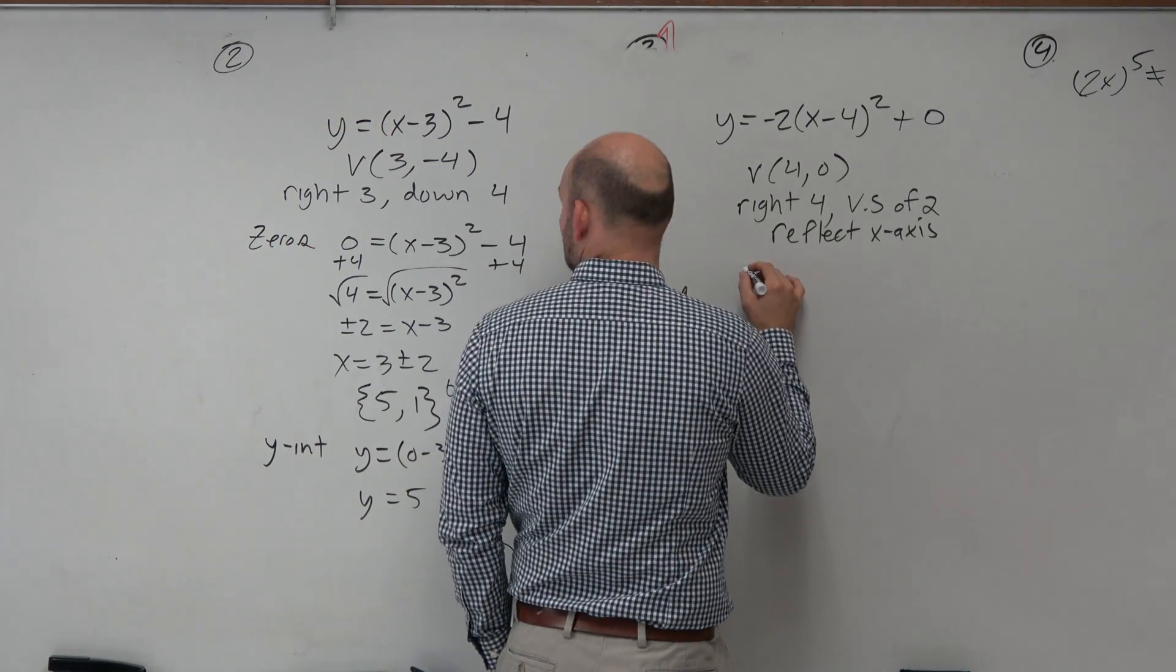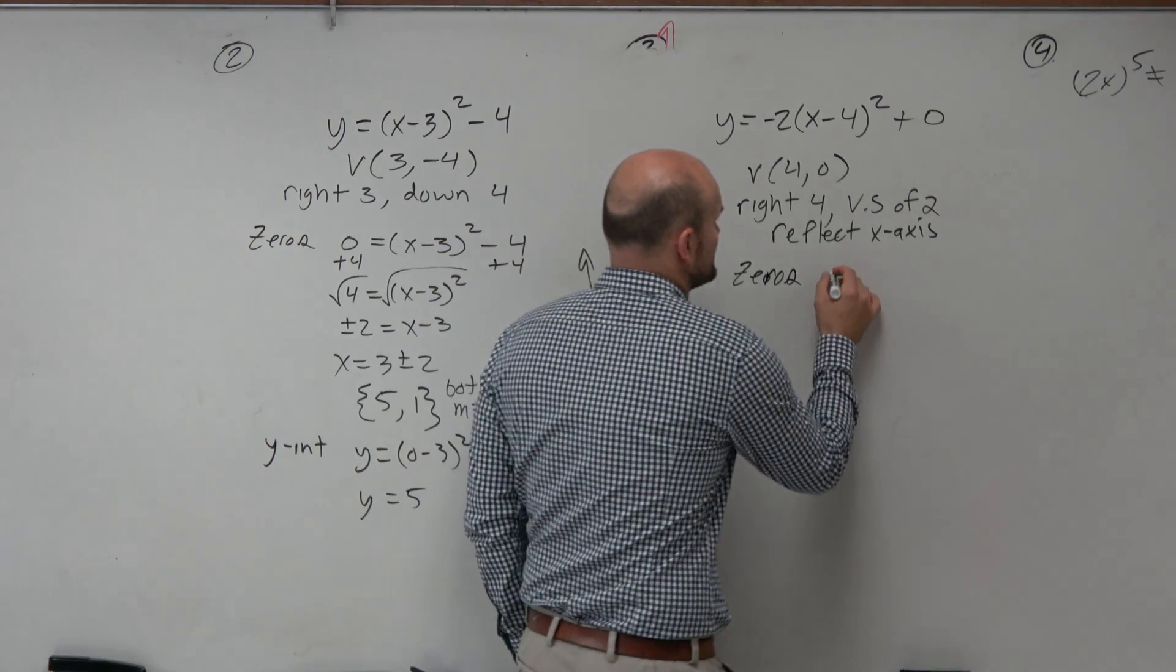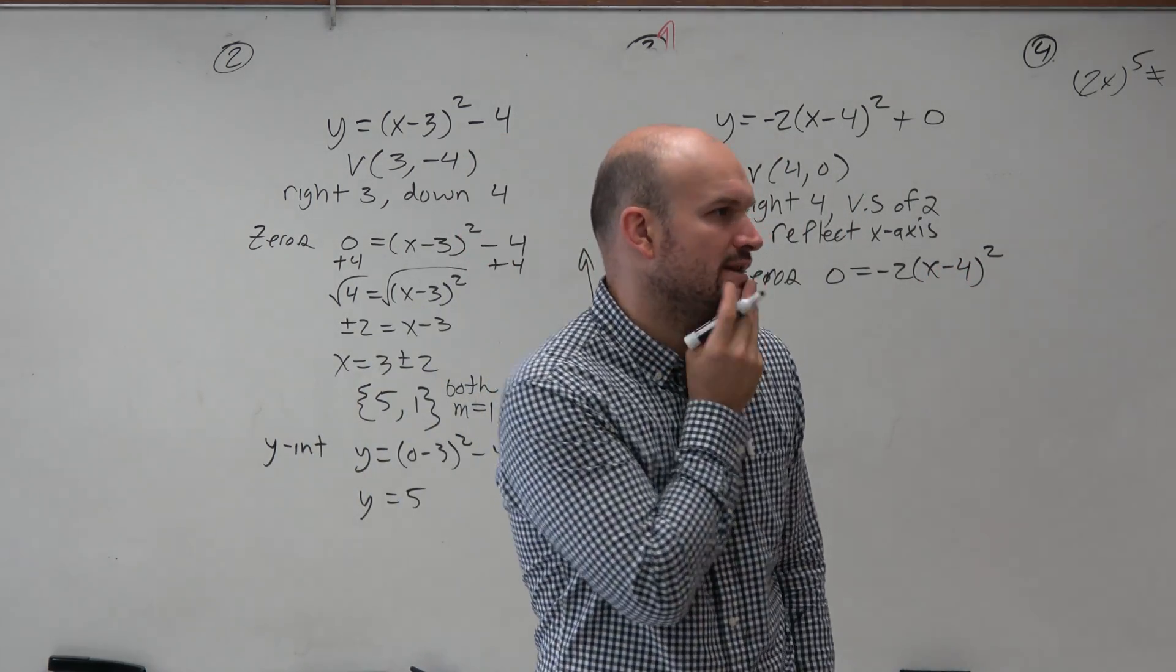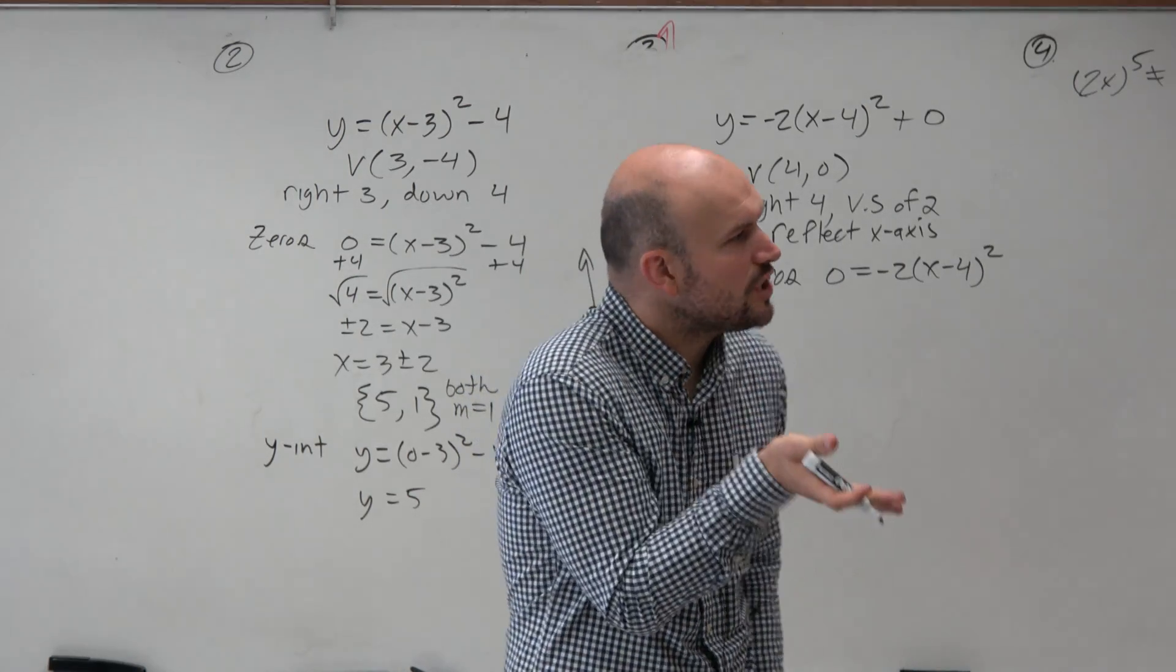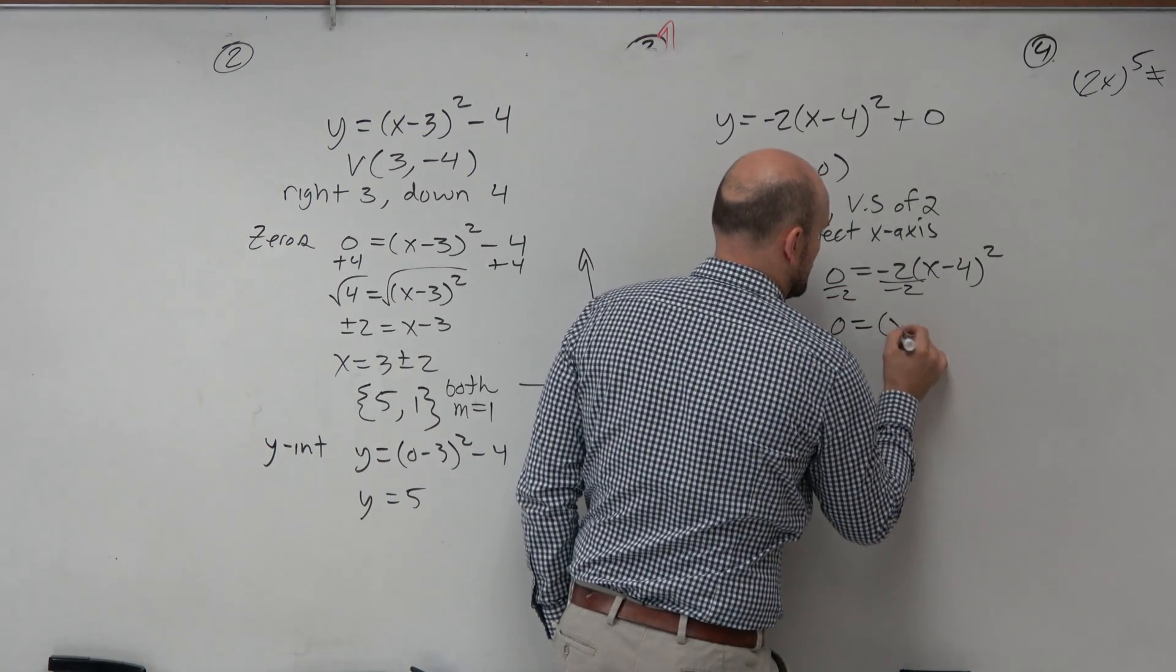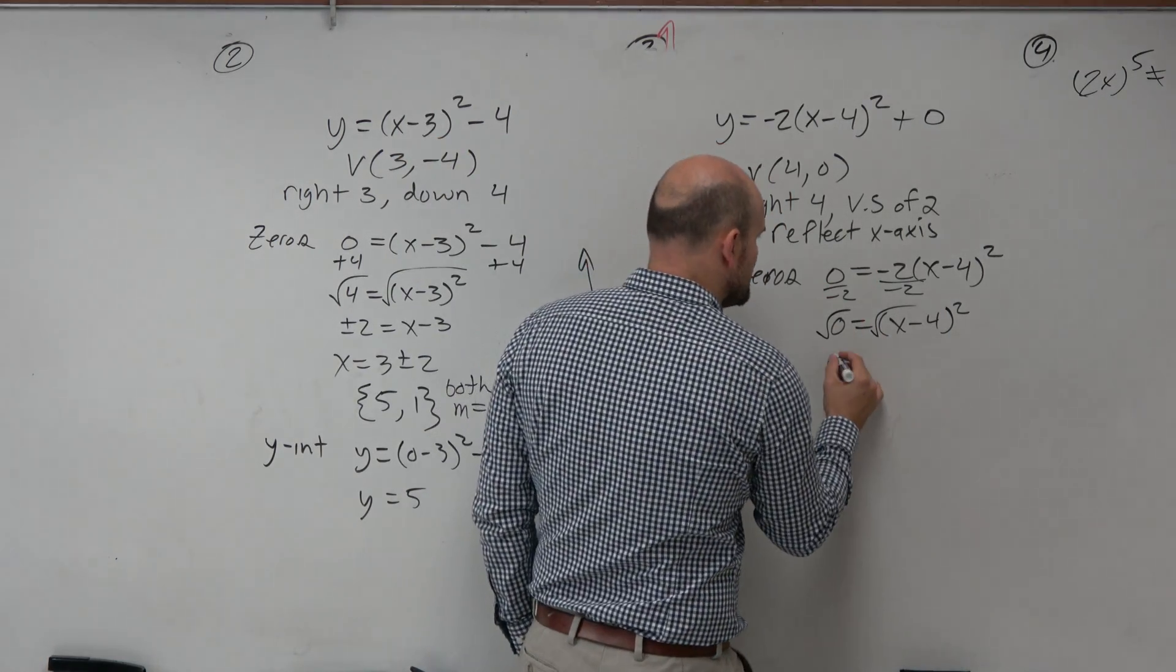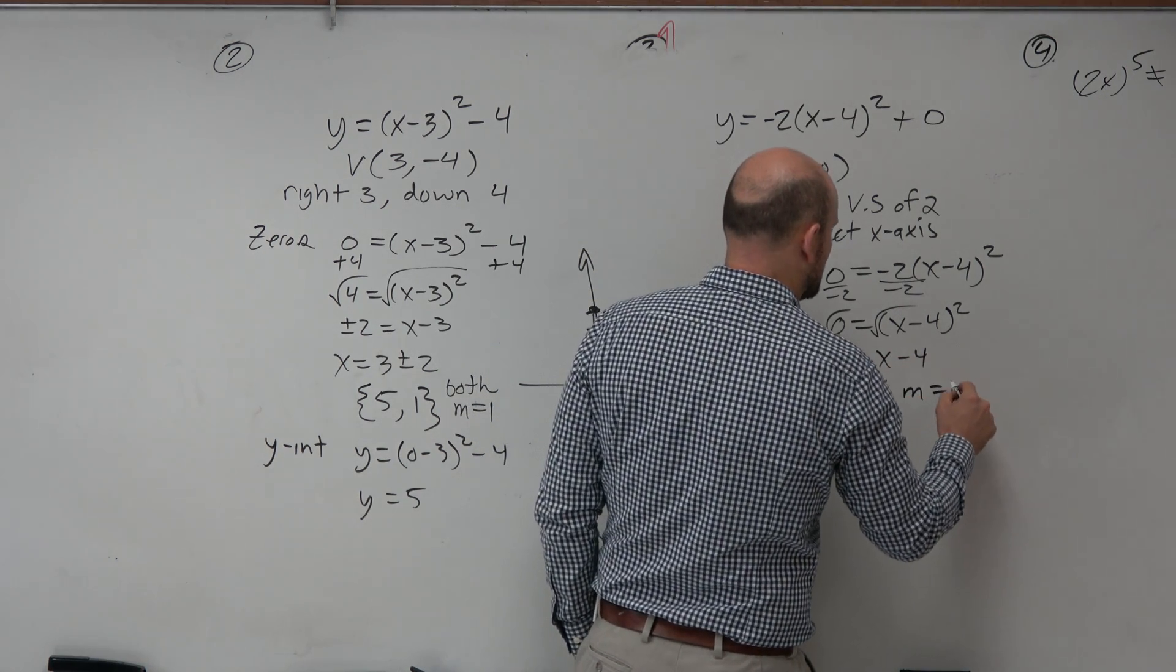OK, I like this. Define the zeros. Now this one, we could set it equal to 0 and solve. So are the zeros 4 and negative 2? No. What happens when you solve? The first thing you're going to do is divide out the negative 2. Then you take the square root. There is no plus or minus of 0. So 0 equals x minus 4. So then you could say x is equal to 4 with a multiplicity of 2.